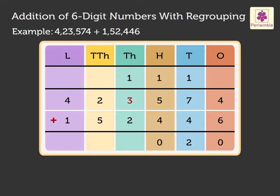Next, 1 plus 3 plus 2 equals 6 in the thousands column. Now, 2 plus 5 gives 7 in the ten-thousands column. Finally, 4 plus 1 equals 5 in the lakhs column.